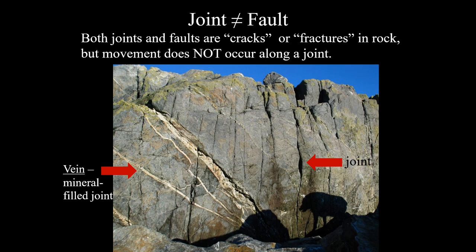One important thing to remember: a joint is not a fault. Rocks often form joints because intrusive igneous rocks form under pressure deep in the earth, then when exposed at the surface they no longer have the overburden pressure and expand slightly, creating joints. But a joint has no movement along it. The difference is that a fault must have some movement — any displacement along a joint means we no longer call it a joint; we call it a fault.